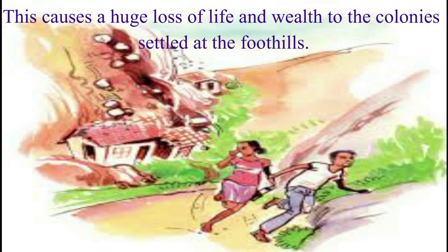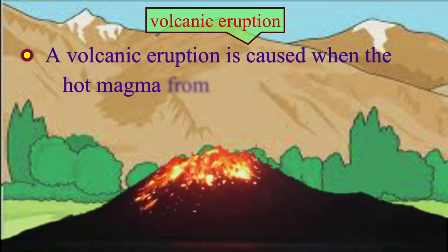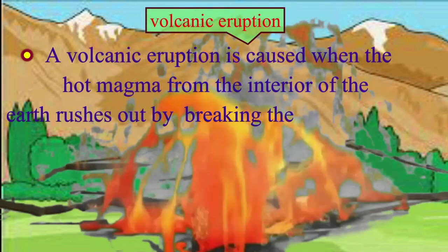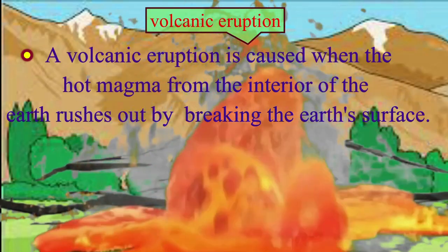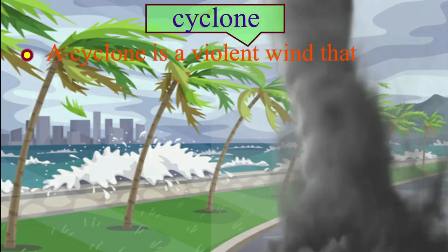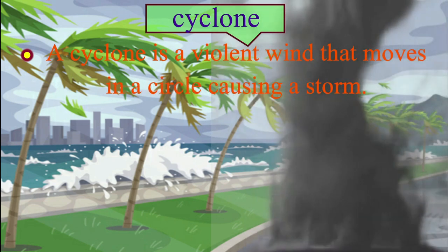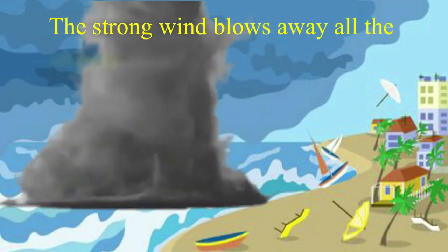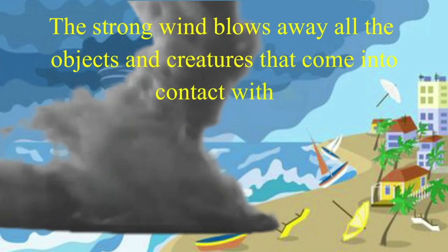A volcanic eruption is caused when the hot magma from the interior of the earth rushes out by breaking the earth's surface. A cyclone is a violent wind that moves in a circle causing a storm. The strong wind blows away all the objects and creatures that come into contact with it.